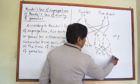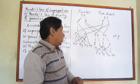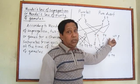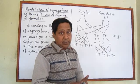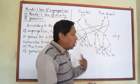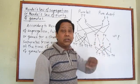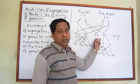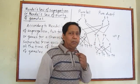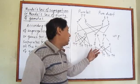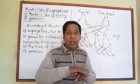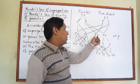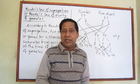Now, what he observed exactly: tallness and dwarfness remain together in the first generation, but they never blend with each other and never give an intermediate product in the offspring. He meant to say that tallness remains always tall and dwarfness remains always dwarf. They may be present together in a plant, but they never mix with each other. The offspring can never be of intermediate height — neither fully tall nor fully dwarf; a middle height is not possible.